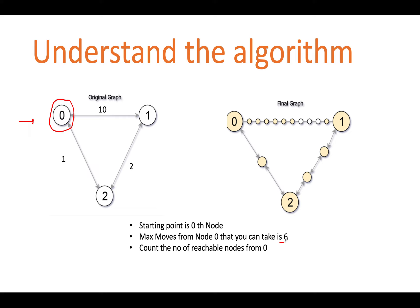The max moves value is given as 6 in the question. So starting from the 0th index, taking at max 6 steps ahead, how many nodes are reachable? Counting: 1, 2, 3, 4, 5, 6 — and you can't go beyond this because the maximum you can take is 6. Including the 0th node itself, that's 7. Then additional nodes reachable at distances 1, 2, 3, 4, 5, and 6 from 0 are also counted, giving a total where the last reachable node is exactly at distance 6.